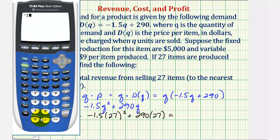Negative 1.5 times 27 squared plus 290 times 27 gives us a total revenue of $6,736.50.